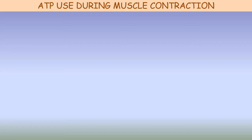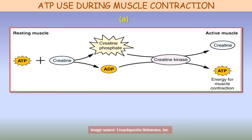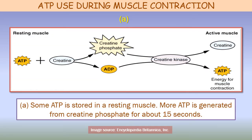Now let us learn about the ATP use and their sources during muscle contraction. Muscle contraction depends on energy supplied by ATP. Muscle cells obtain ATP from several sources. The ATP is split to form ADP which transfers energy from the ATP molecule to the contracting machinery of the muscle fiber, then the ADP is rephosphorylated to form new ATP within another fraction of a second, which allows the muscle to continue its contraction. There are several sources of energy for this rephosphorylation.